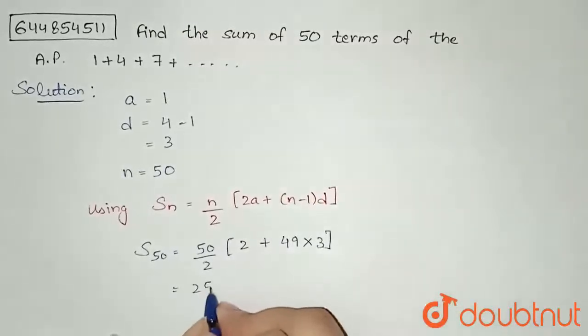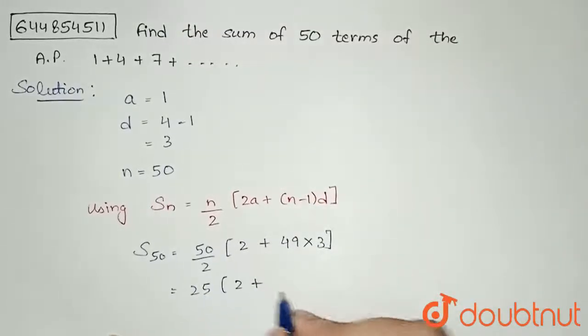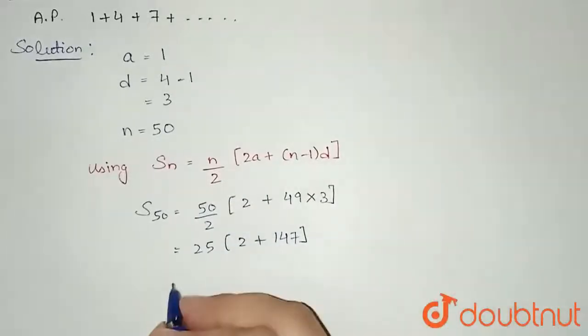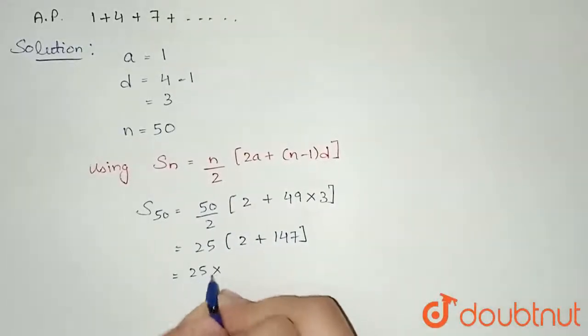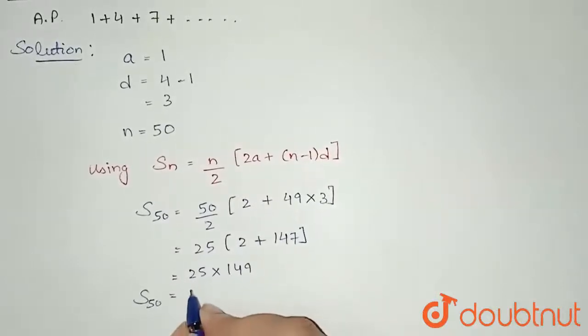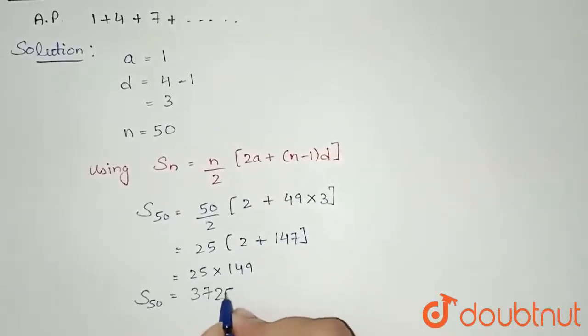So I will get 25 into 2 plus 49 into 3 is 147. So I will get 25 into 149, and sum of 50 I will get finally as 3,725.